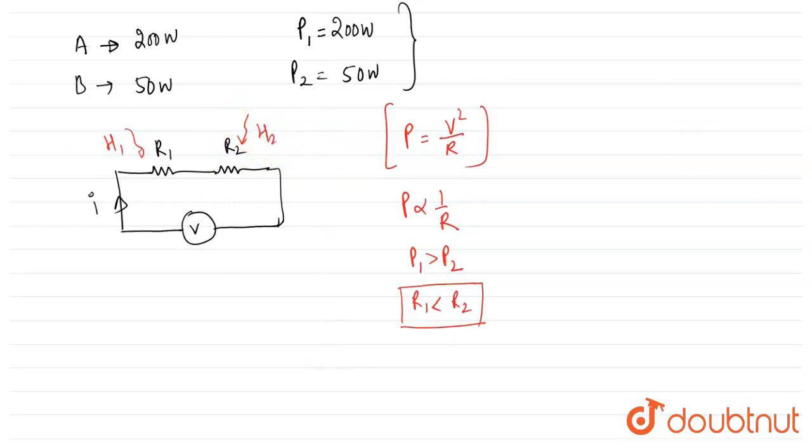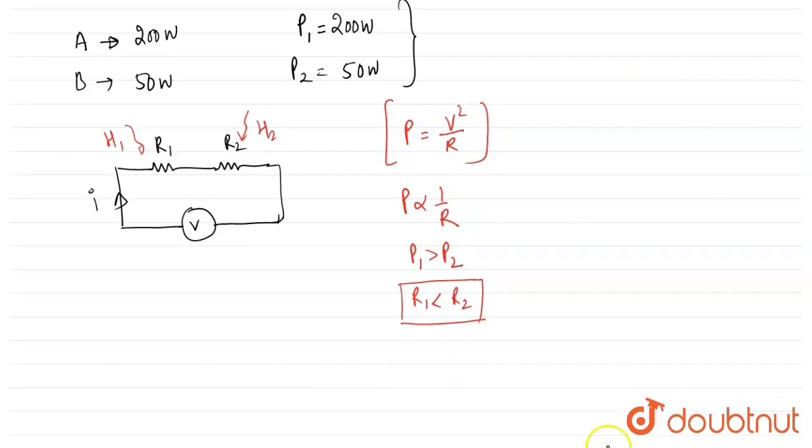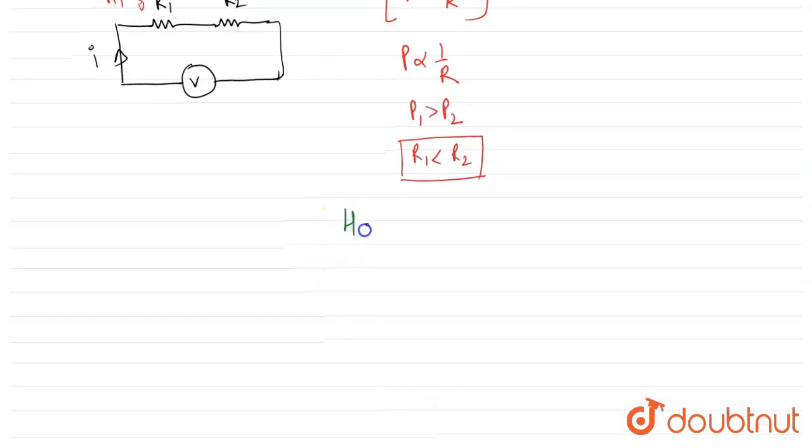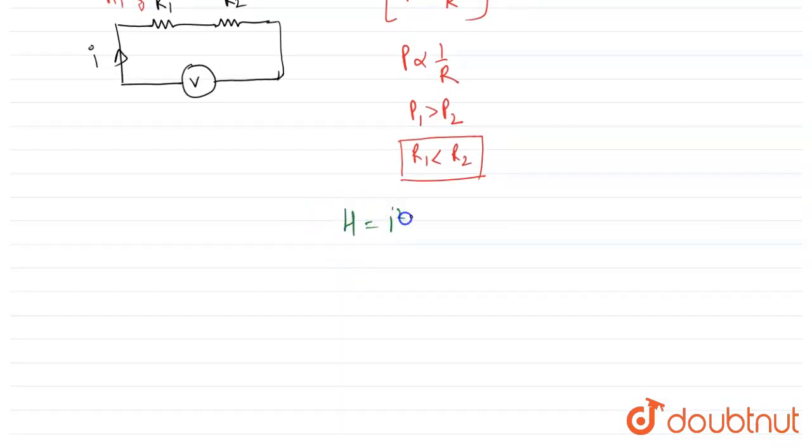So the relation of heat H is equal to I squared Rt. So the time for both bulbs is same, the current in both bulbs is same, so the heat H depends on resistance and is proportional to R.